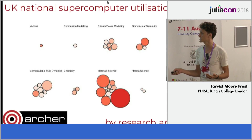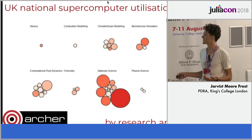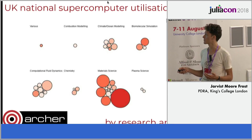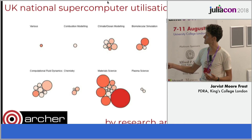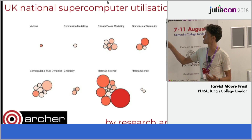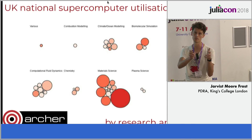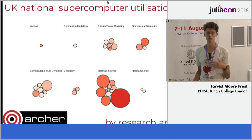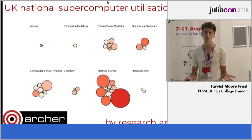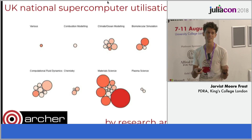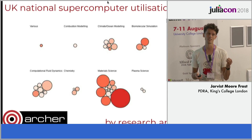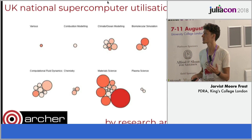This is Archer, the supercomputer in the UK, and this is a breakdown of where the time is spent by research area. This large area is material science, there is chemistry, and there is biomolecular simulation — which also has atoms jiggling around. Greater than 70% of total supercomputer time is being spent on moving atoms and molecules around, so it really is the biggest area of research in terms of where the computer time is going.